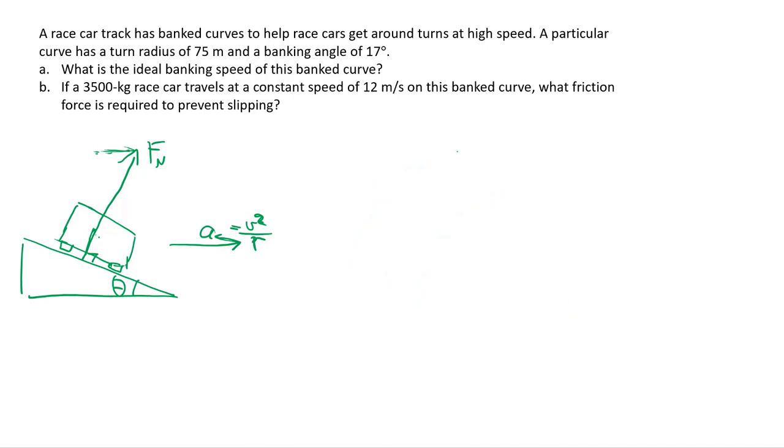So that's the whole reason for these bank curves. Part A deals with the ideal banking speed. In the case of ideal banking, this arrangement allows for a specific speed at which no friction is required between the ground and the tires in order to keep you traveling that constant circle. And that's totally legit, because since we're dealing with rolling tire, we're dealing with static friction. So as long as we're less than or equal to mu_s F_N, F_f could totally be zero.